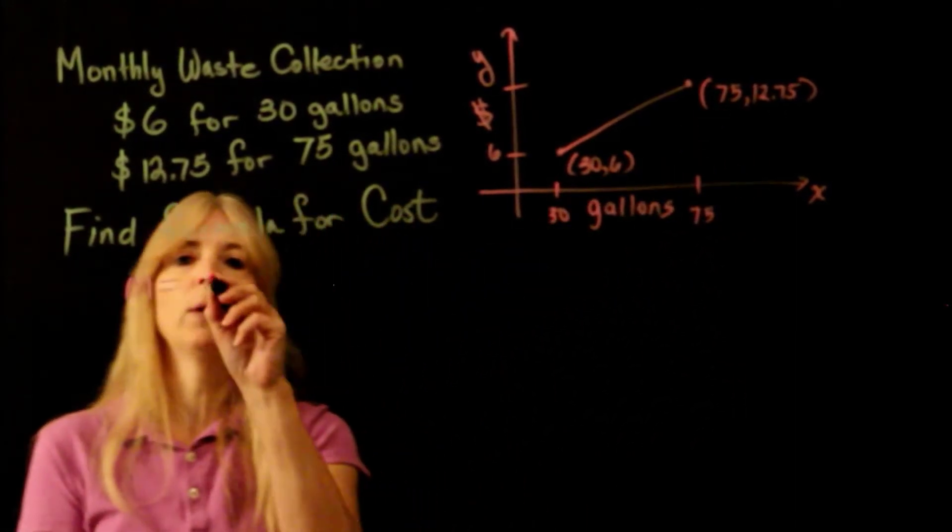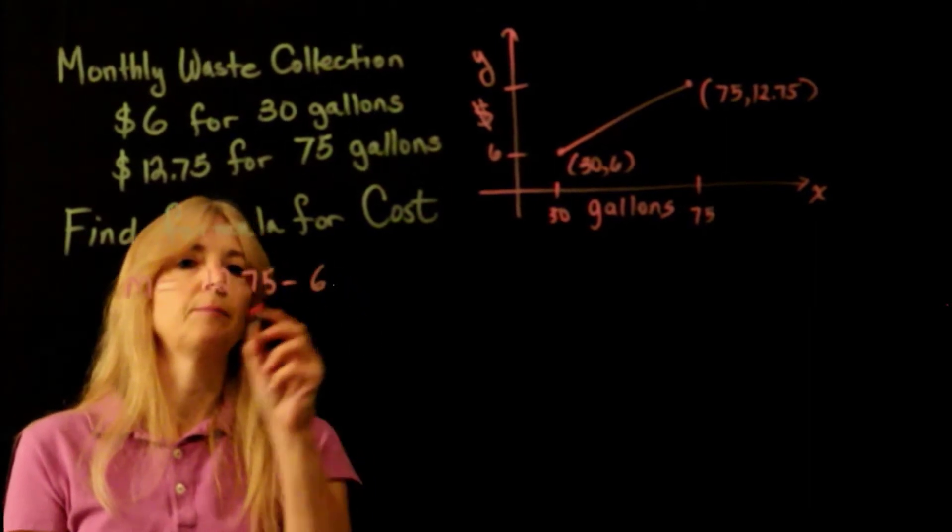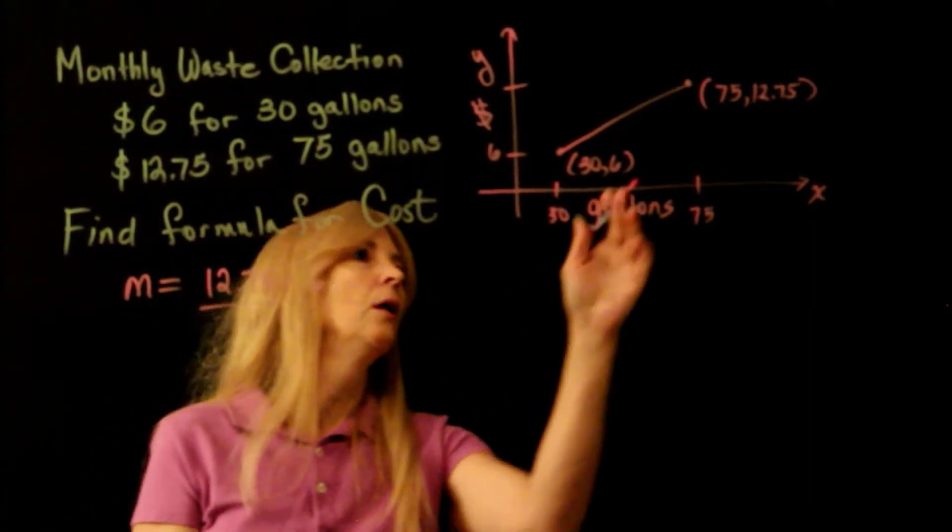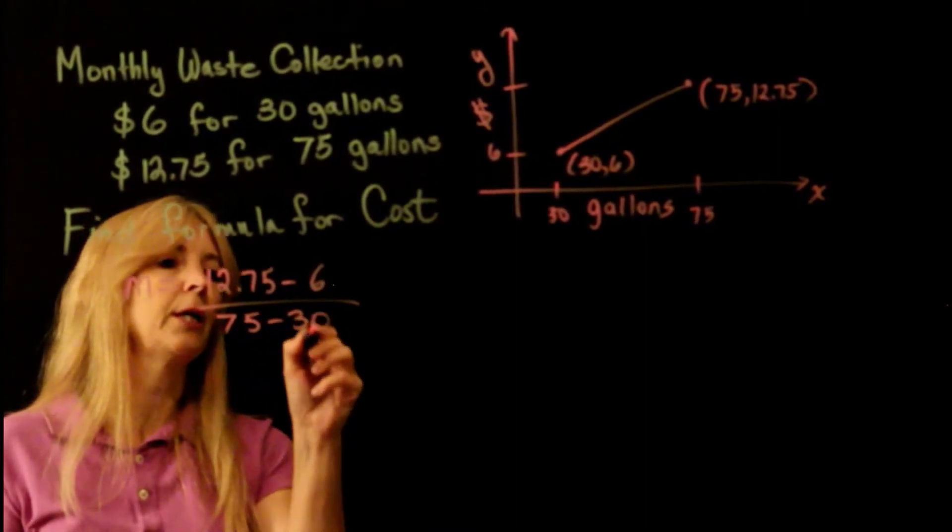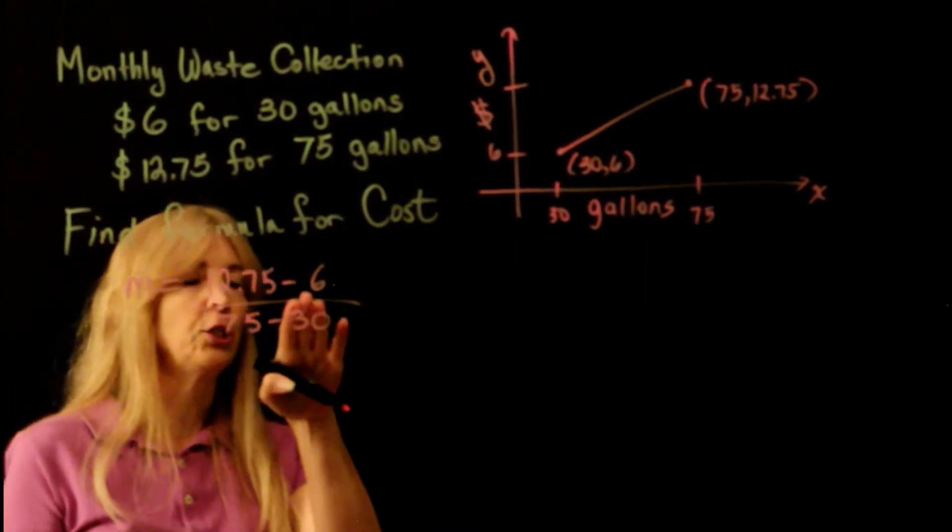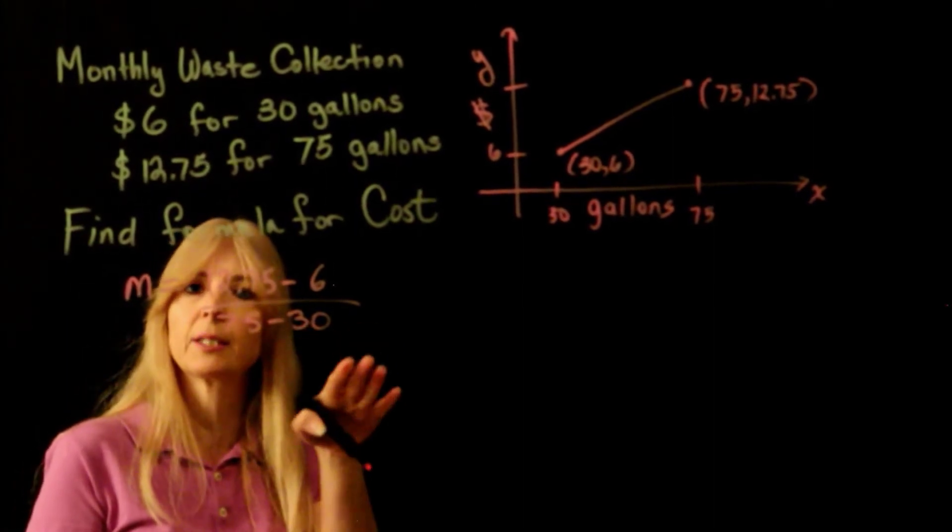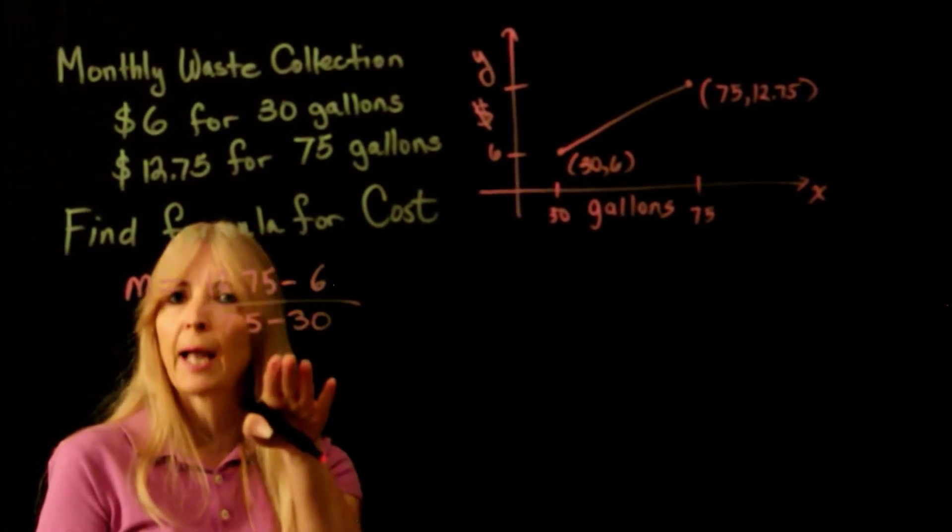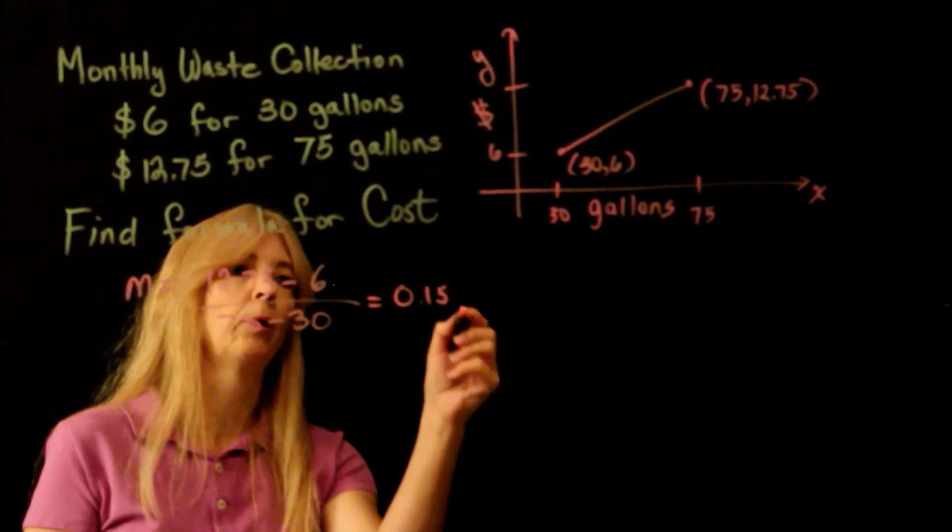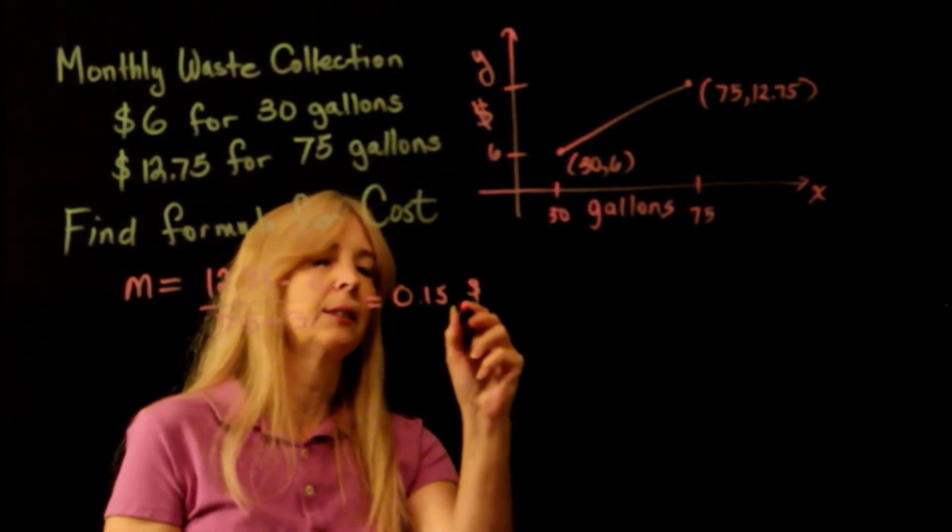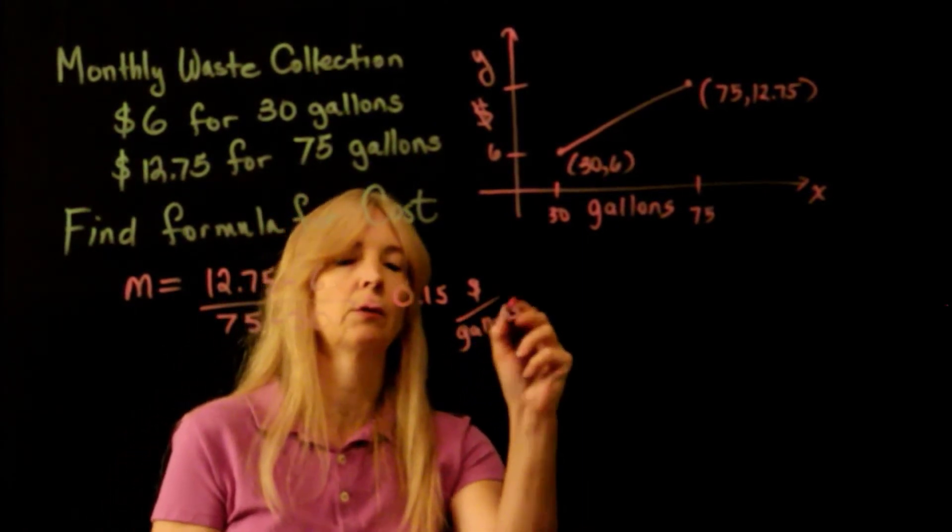So now I can just look at my points and say, okay, 12.75 minus 6 over 75 minus 30. So my change in my cost over change in my gallons, which kind of makes sense, dollars per gallon. And when you work that out, you should get 0.15, and as I said, you shouldn't forget those units, so that's in dollars per gallon.